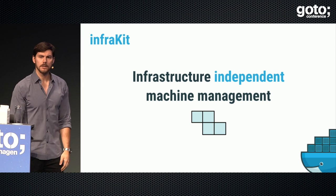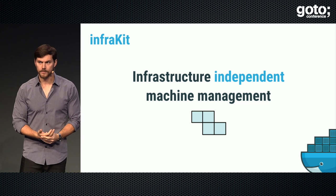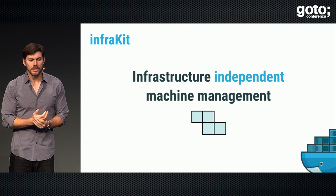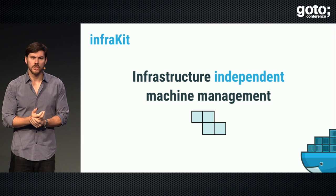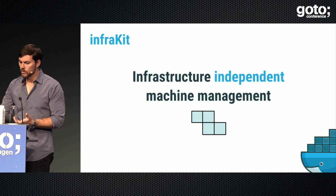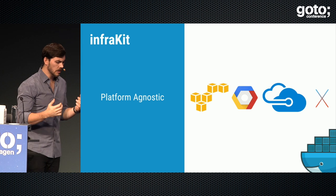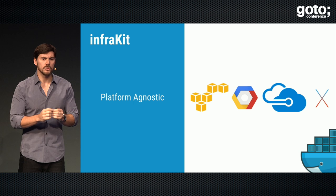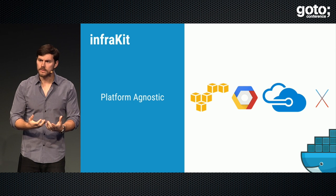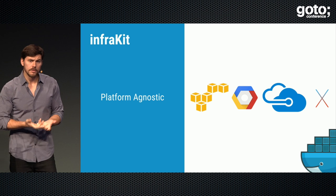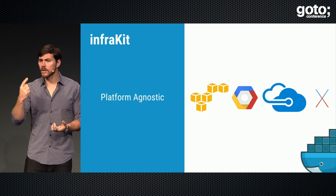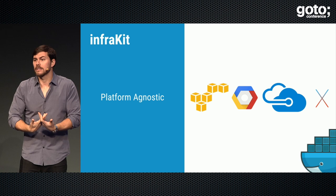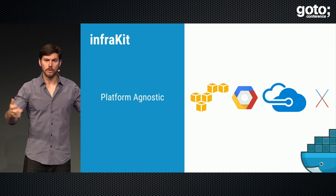Let's talk about InfraKit. It's one of the most recent open source projects Docker has created. It allows you to have infrastructure-independent machine management — it doesn't matter if you're using local infrastructure, AWS, Google Cloud Platform, or Azure. InfraKit lets you create and manage the lifecycle of virtual machines and operating systems using one declarative, YAML-based tool. Cloud migration and cloud management become really easy because it's an independent platform.